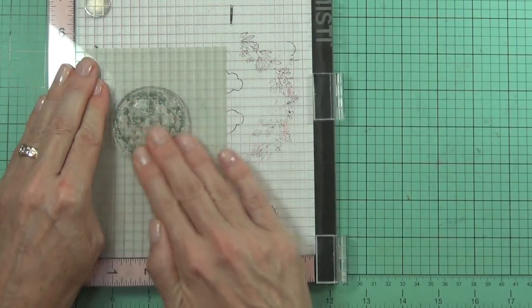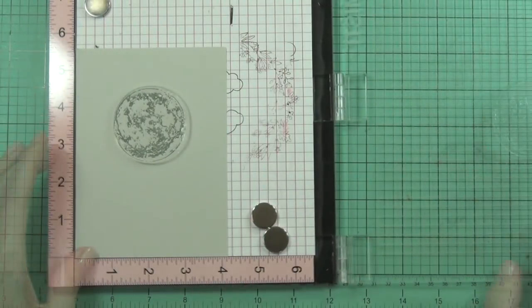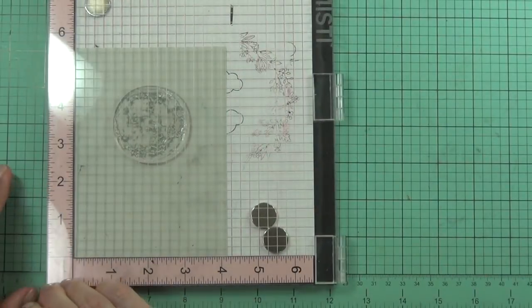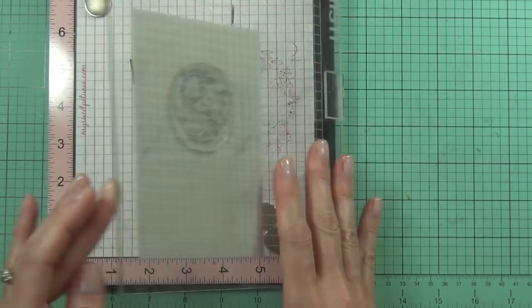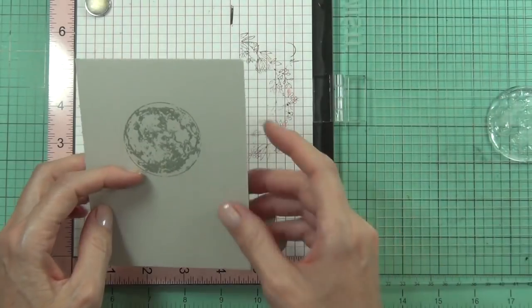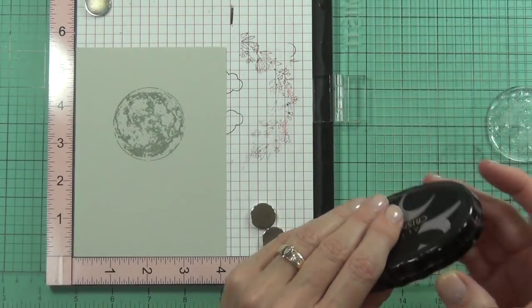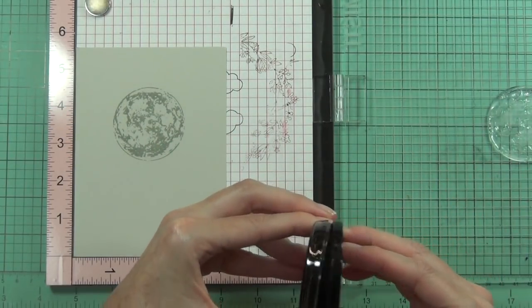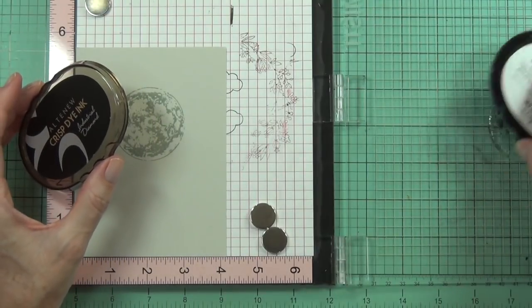Now I have decided to use my Misti today because then I can get a lot more even coverage with my stamping. It takes the guesswork out of it if I need to add a couple of layers, which I have in a lot of my stamping today.